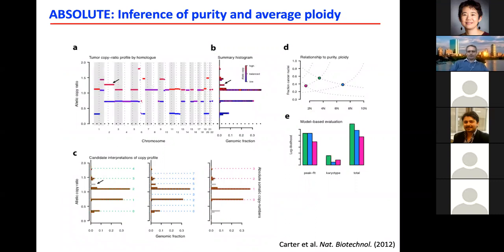We developed a method together with Scott Carter, now a PI at Dana-Farber, that looks at both copy number and mutation data, examines the allele fraction of different copy number events, the allelic copy ratio, and the allele fraction of different mutations, and tries to fit a histogram that is affected both by the purity and ploidy.